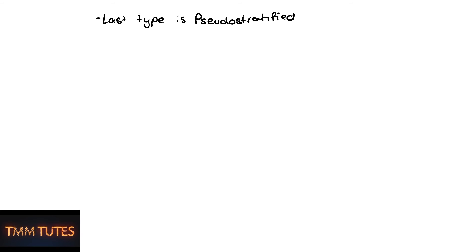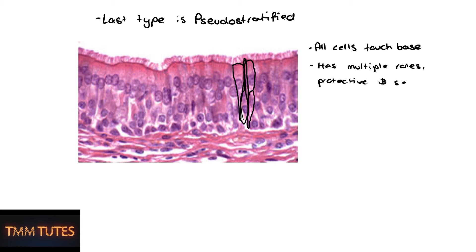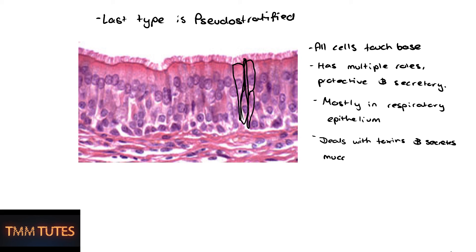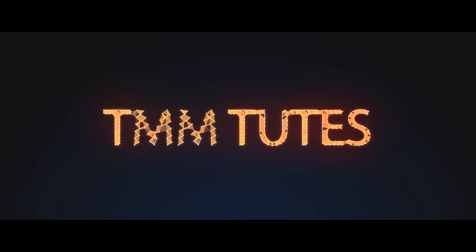The last type is pseudostratified epithelium — a sort of in-between type. All the cells are actually in contact with the base even though it looks like two or three layers. This is almost exclusively found in the respiratory epithelium. It's both protective and secretory — when you breathe in toxins it has to deal with them, but it also secretes mucus so you can cough it up. It also has cilia that beat in synchronicity to move mucus and clear bacteria. I hope this video has helped you out — thanks so much for watching.